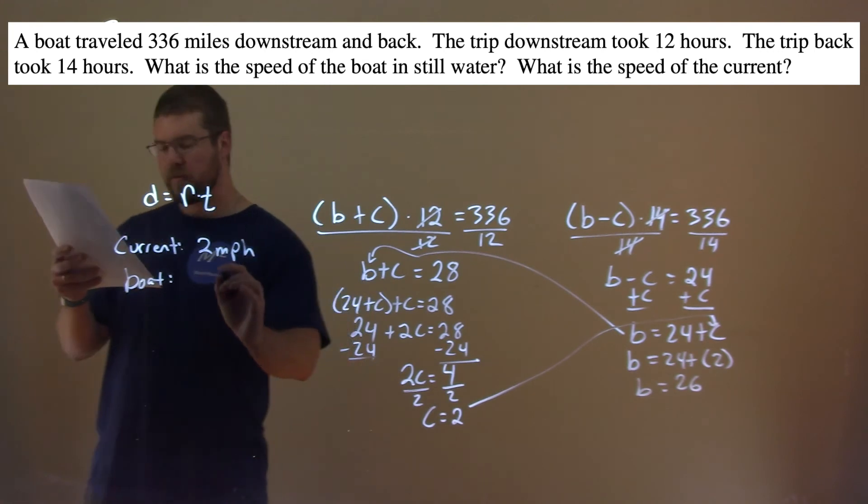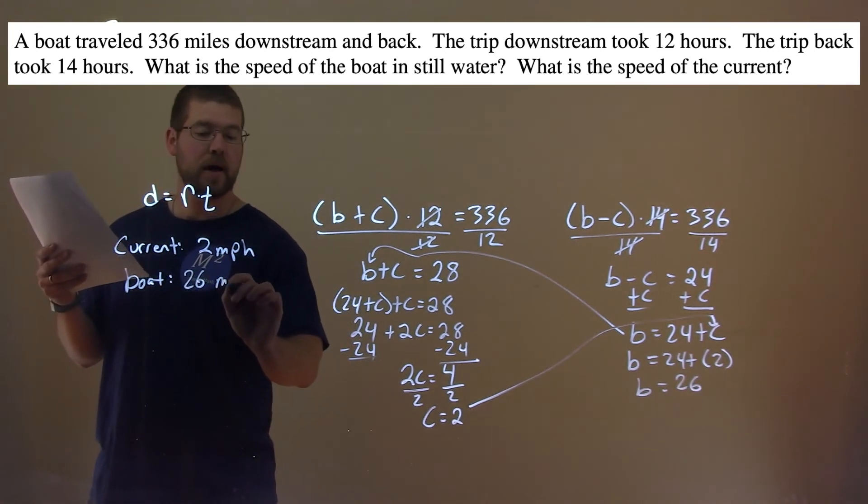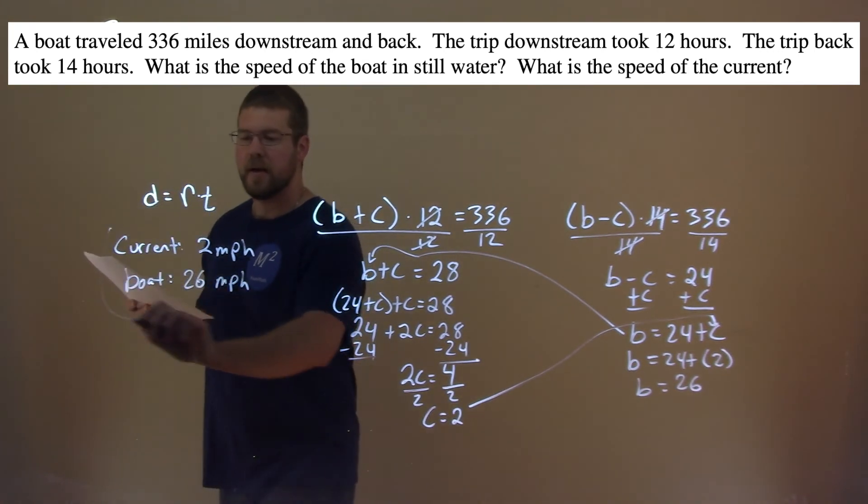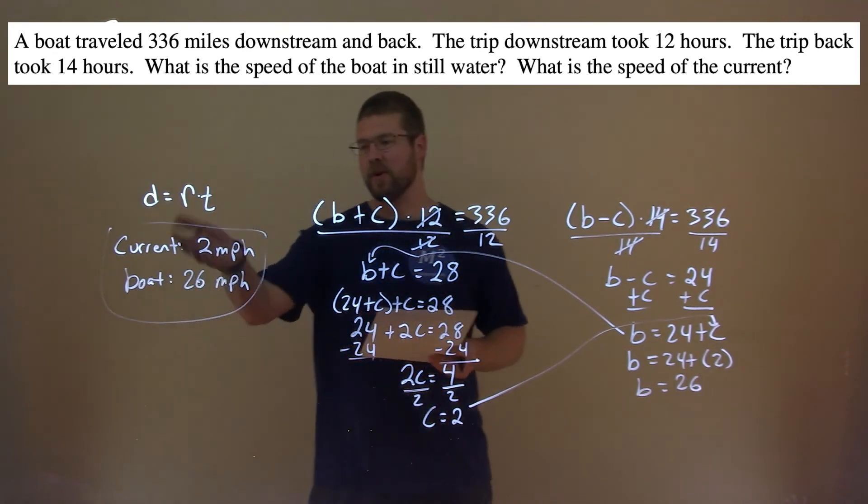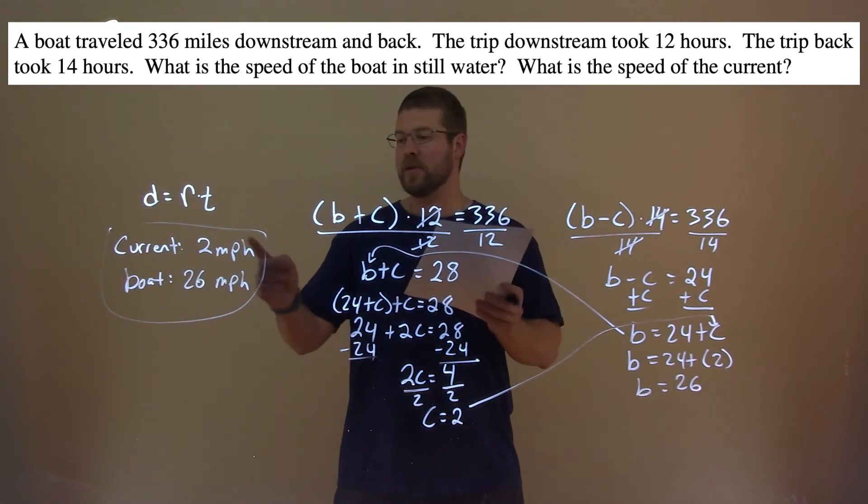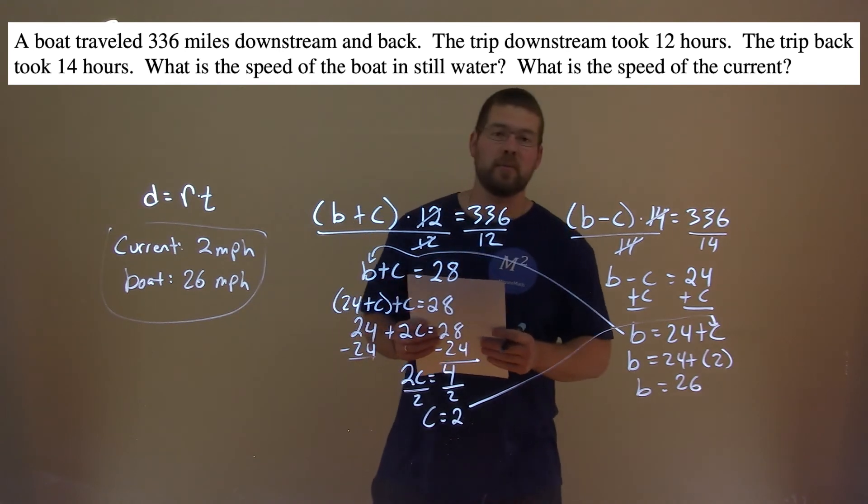So the speed of the boat is 26 miles per hour. And now we have our final answer. Current is 2 miles per hour, and our boat is 26 miles per hour.